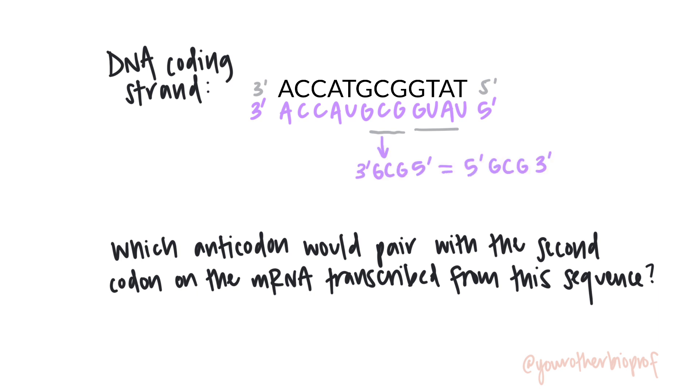If it bugs you to have the five prime end over on the right, just flip it around. It says the same thing, but when you've got it oriented five to three left to right, that's the same way you're going to see it in a codon dictionary. Which we don't need right now because we're not really worried about amino acids, we're worried about anti-codons. So which anti-codon would pair with this? That's going to be one that is anti-parallel and complementary. And again, you can write it either way. It means the same thing.